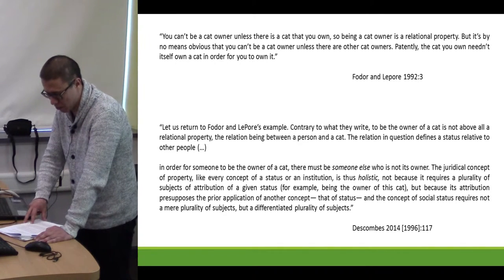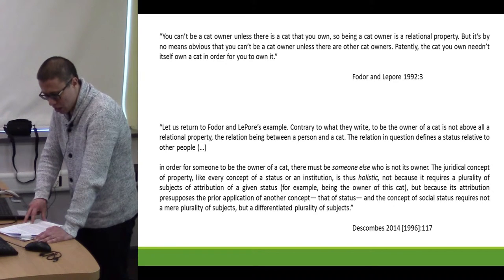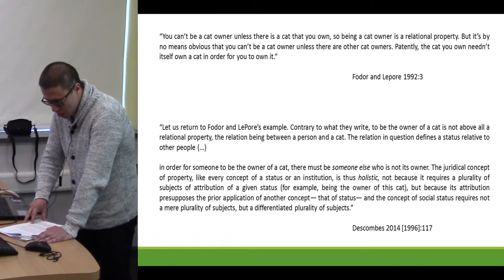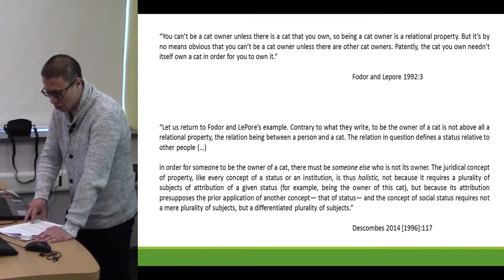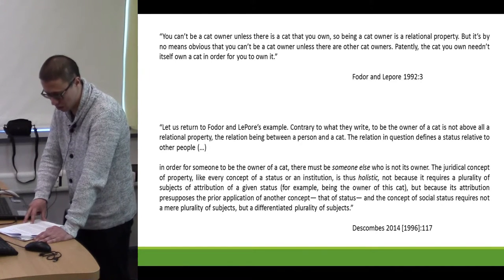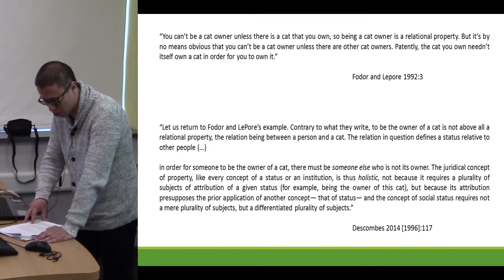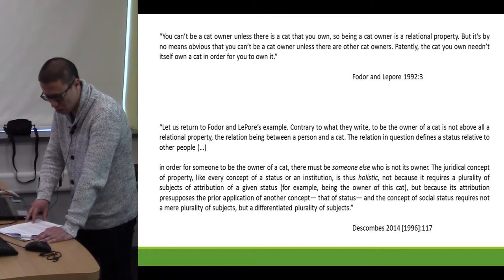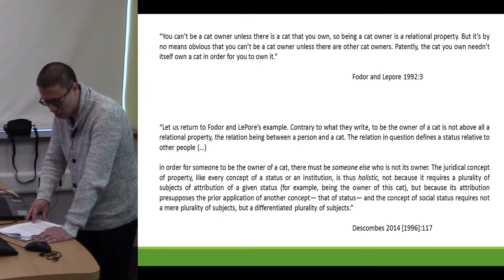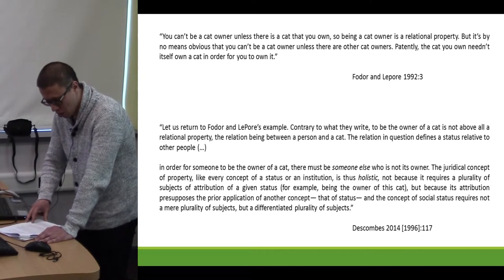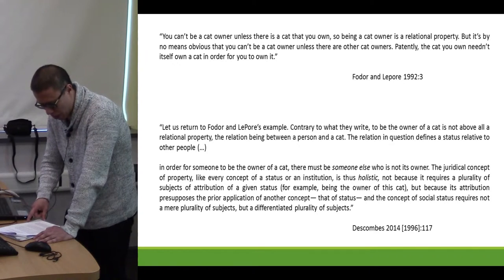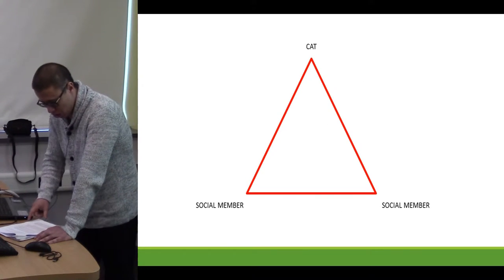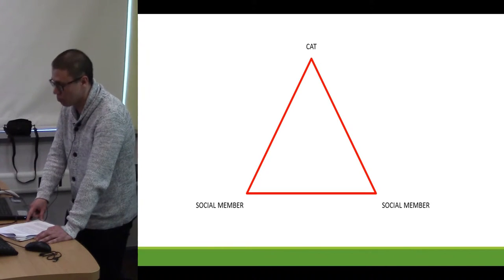Let us return to Fodor and Lepore's example. Contrary to what they write, to be the owner of a cat is not above all a relational property between a person and a cat. The relation in question defines a status relative to other people. In order for someone to be a cat owner, there must be someone else who is not its owner. The theoretical concept of property, like every concept of a status or an institution, is thus holistic not because it requires a plurality of subjects, but because its attribution presupposes the prior application of another concept—that of status—and the concept of social status requires not a mere plurality of subjects, but a differentiated plurality of subjects.